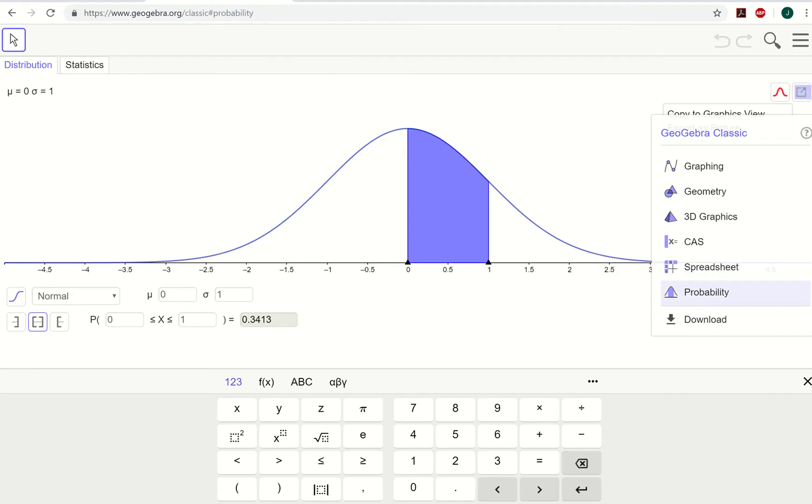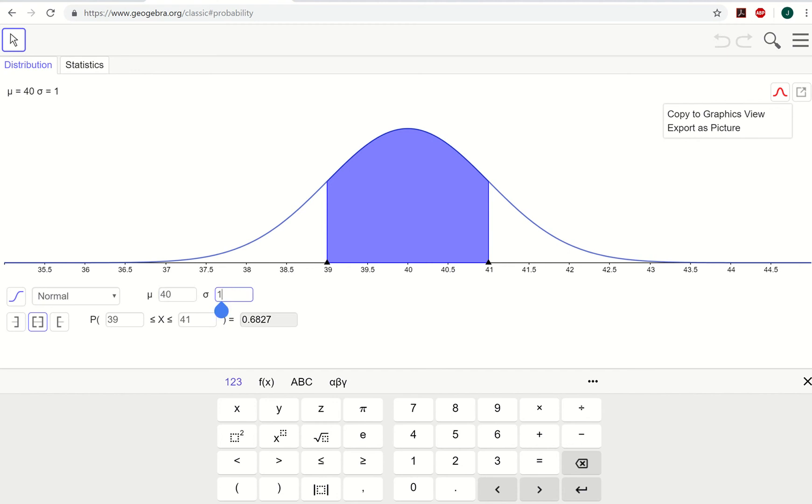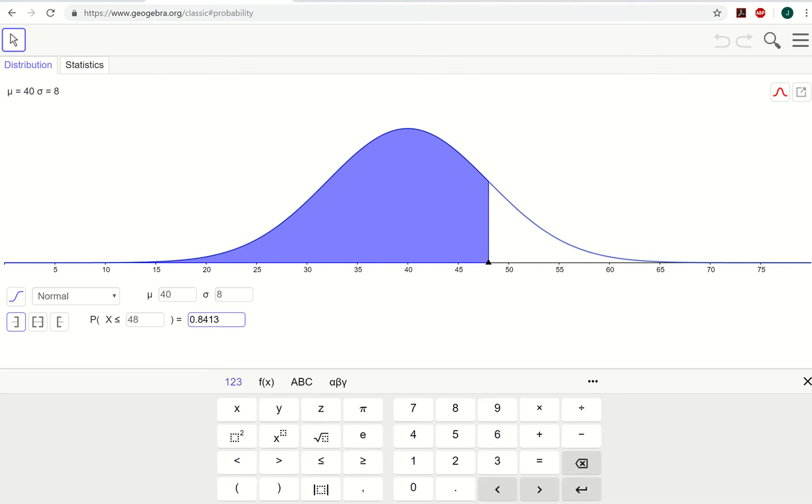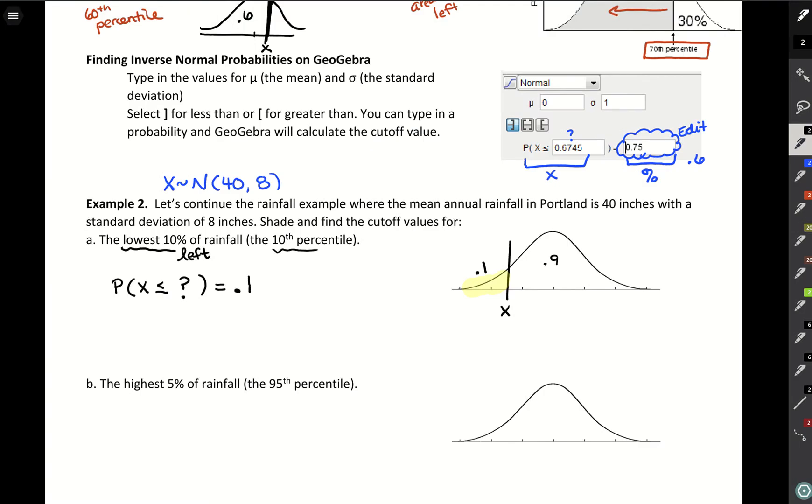So in GeoGebra, what I'm going to do is edit our mean so we'll have a mean of 40, standard deviation of 8, and then we want to go to the left hand side, so we're going to switch to our left hand side, and then we're going to edit the other side of the equation. So where we see that 0.8413 which is our area, we actually want that area to be 10%. So with that, our X value changed to that 29.7476, which will be our solution.